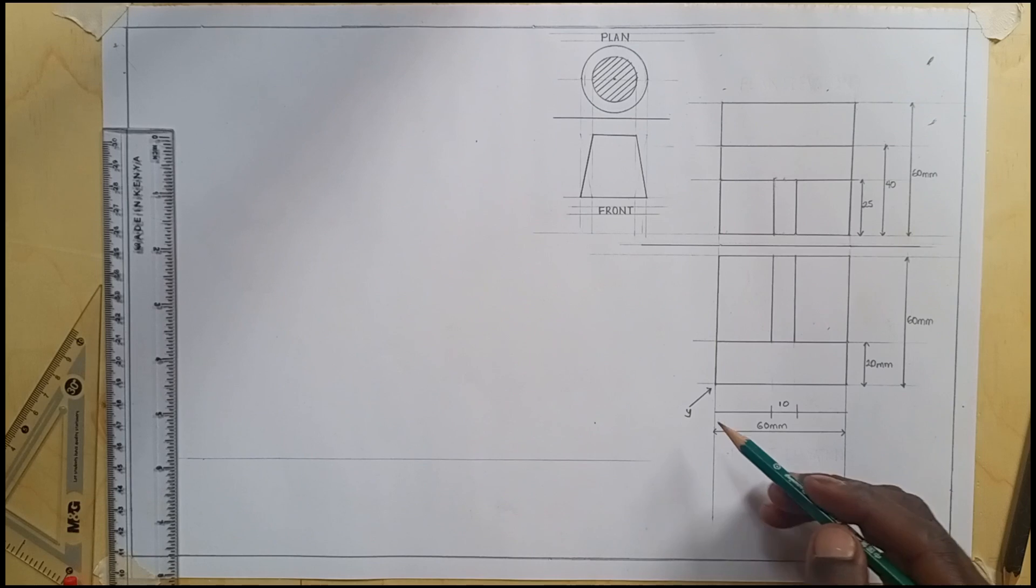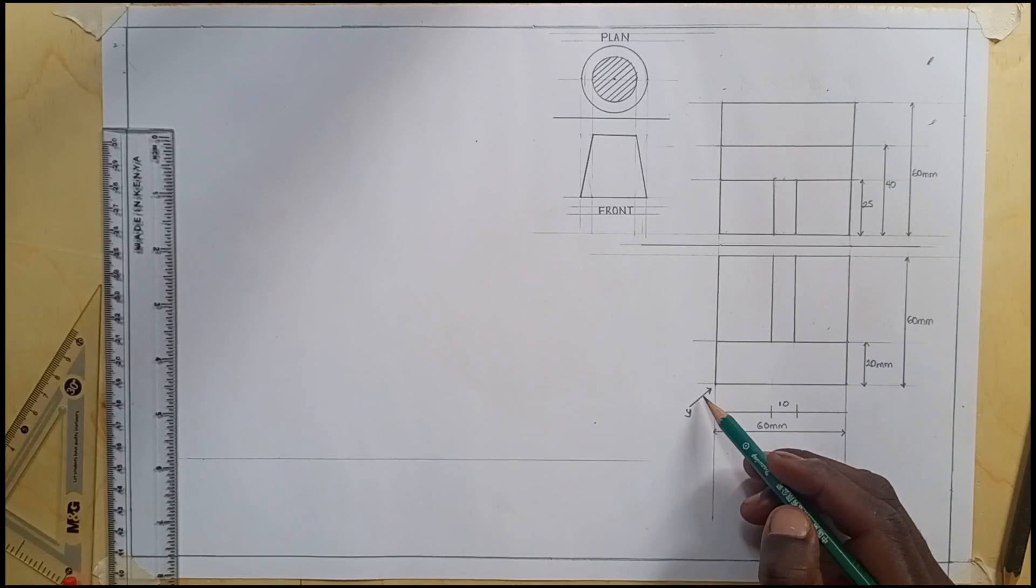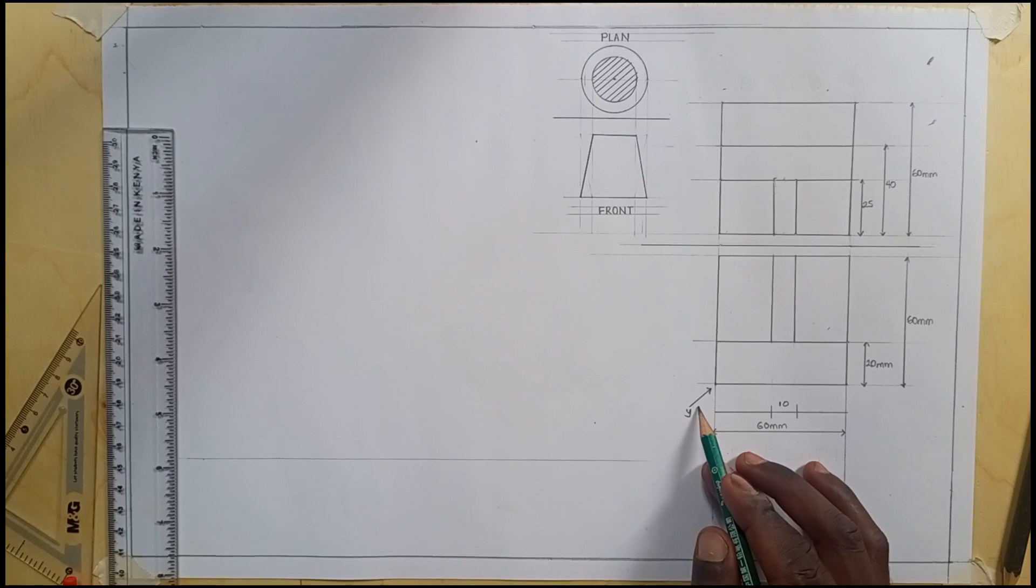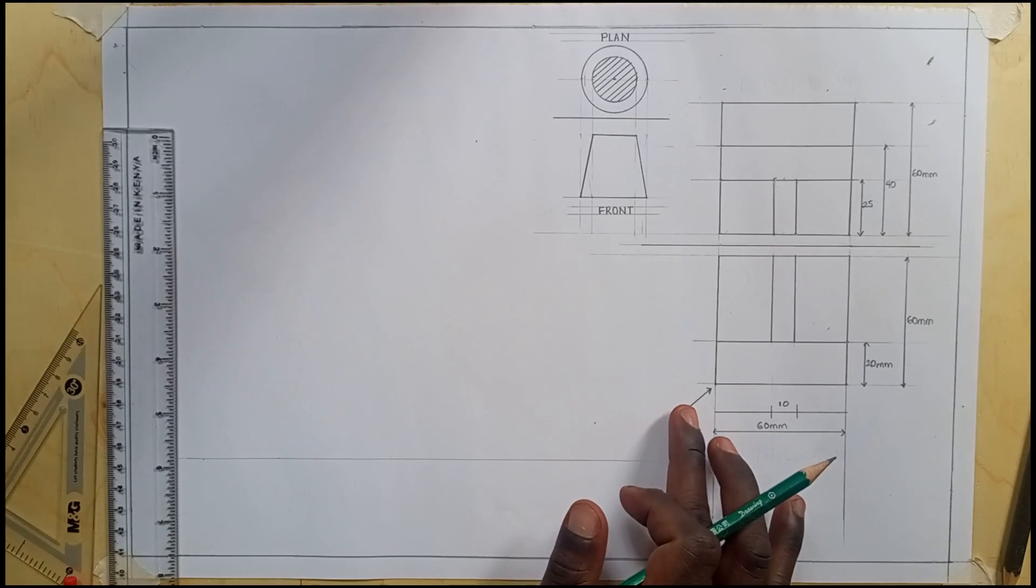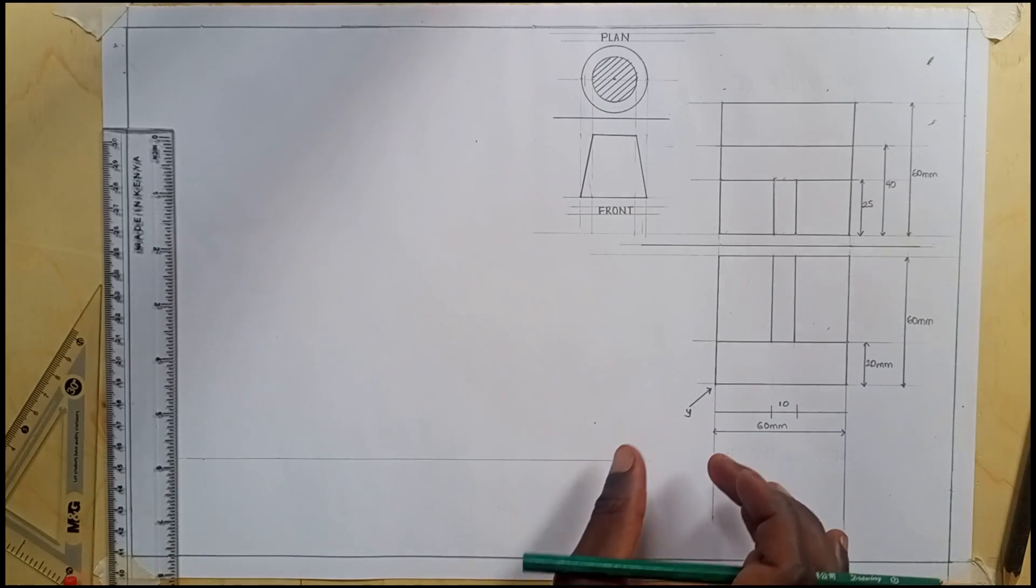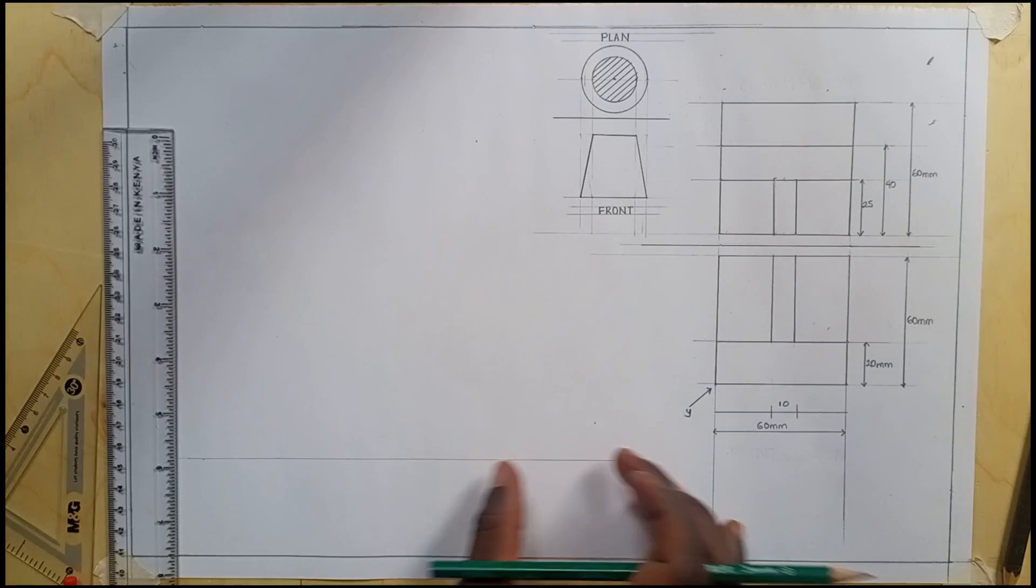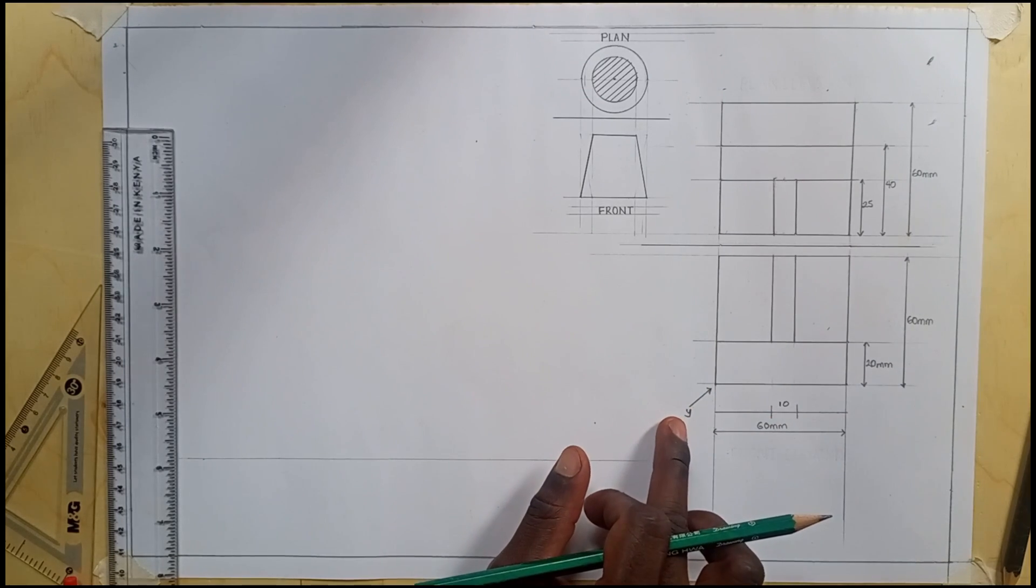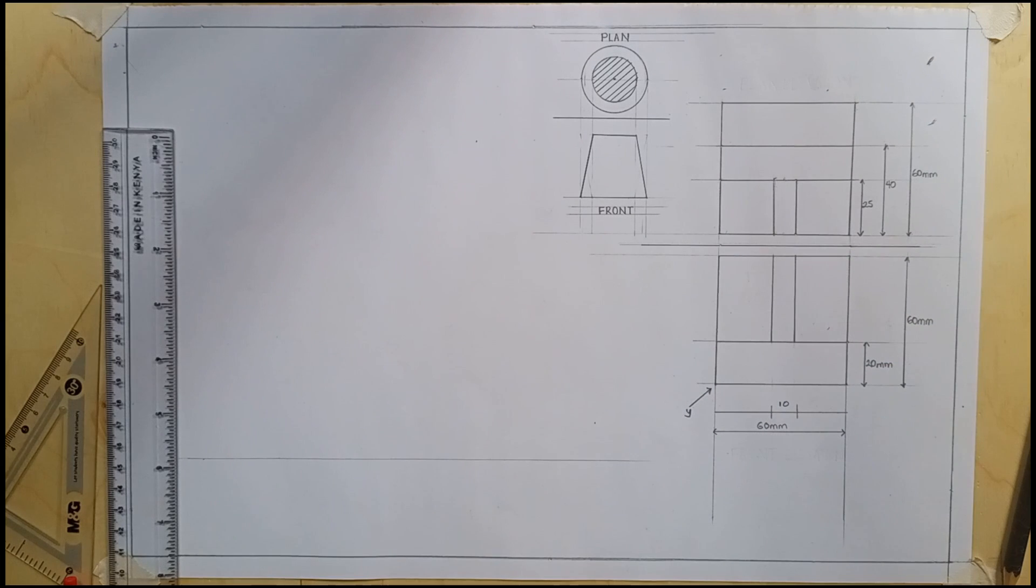We have this point Y. This is going to be our point of view, like imagine you standing here and you view this object that you are going to draw at this point but in this direction. Let's get started.